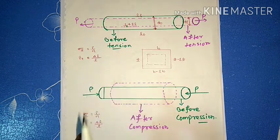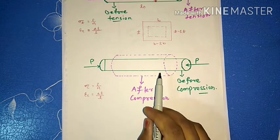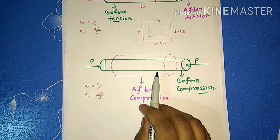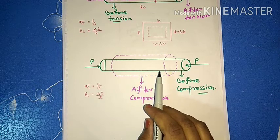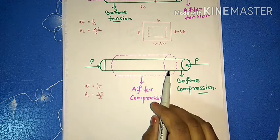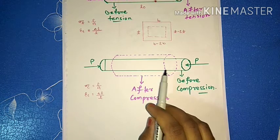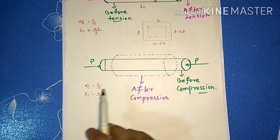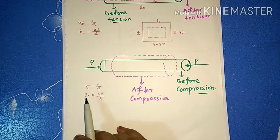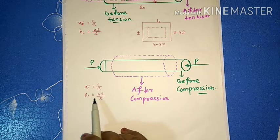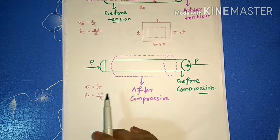Similarly, if a structural member is subjected to two equal and opposite compressive forces, the member tends to shorten or decrease in length. In this case, compressive stress sigma_c equals P divided by A, and longitudinal compressive strain equals delta L divided by L, where delta L is the decrement in length. The final length is L minus delta L.